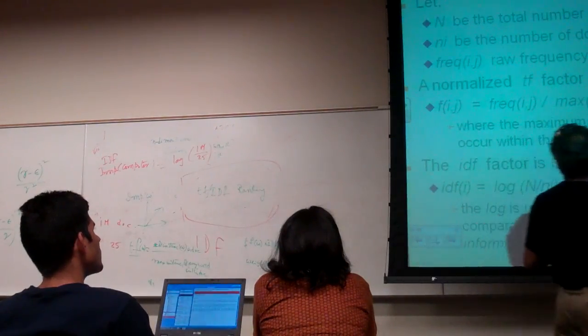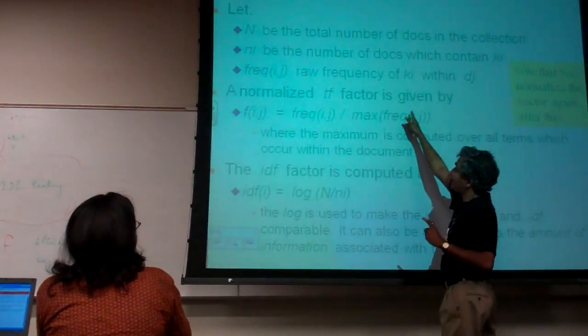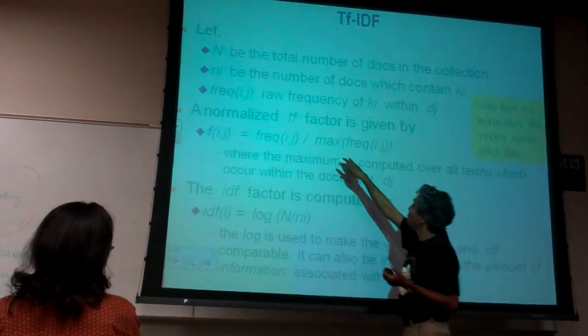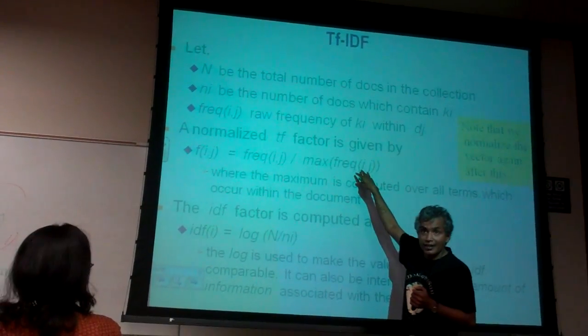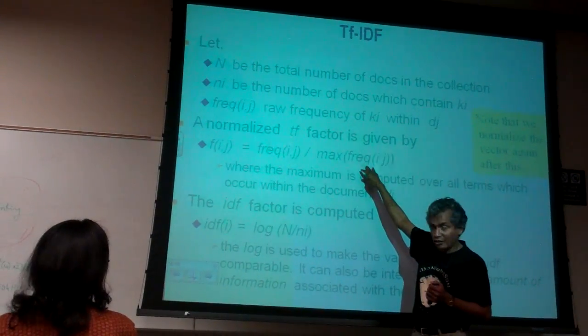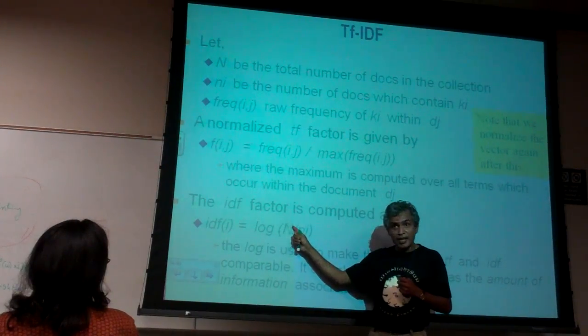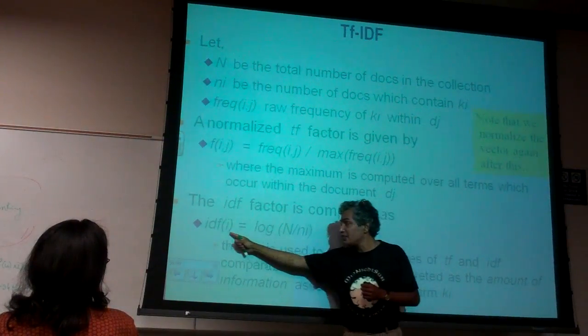So TF-IDF basically—the normalized TF factor is given by frequency of the word in the document divided by the maximum of any word in the document. Maximum frequency of any word in the document.